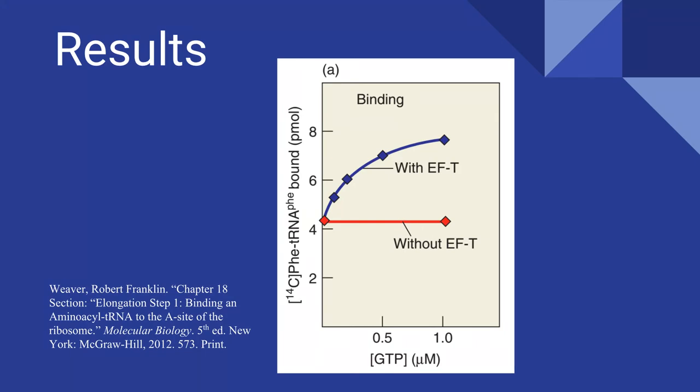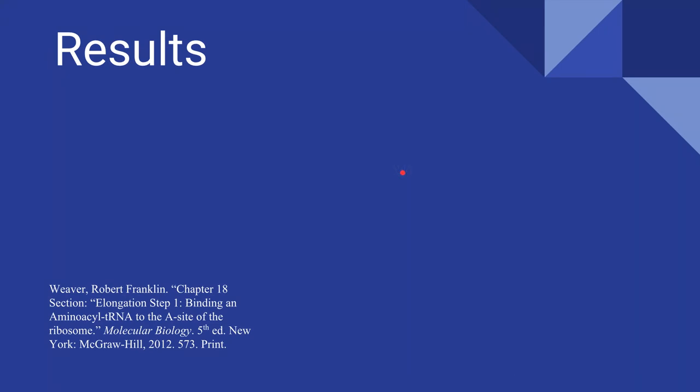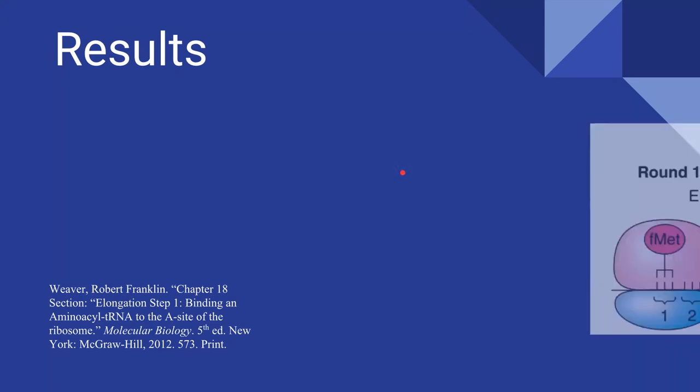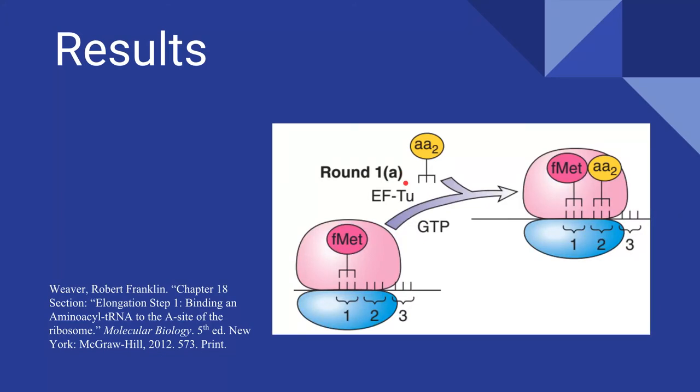By adding more GTP, more phenylalanine-tRNA bound to the ribosomes, but only in the presence of EF-T. As such, both GTP and EF-T are needed to enhance binding of the aminoacyl-tRNA to ribosomes. This is consistent with our model for elongation, where EF-TU and GTP bring aminoacyl-tRNA to the A site of the ribosome.